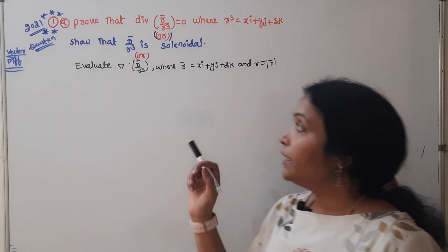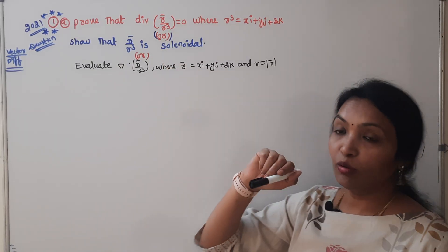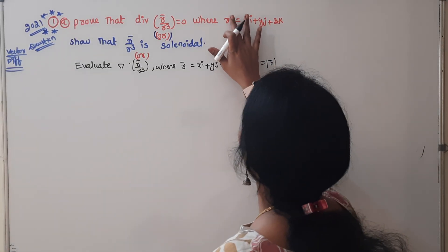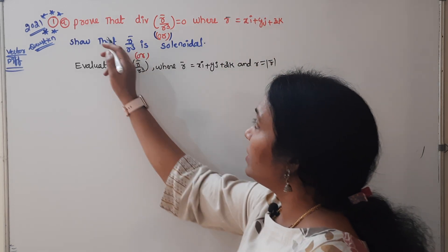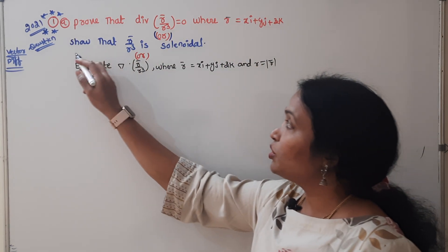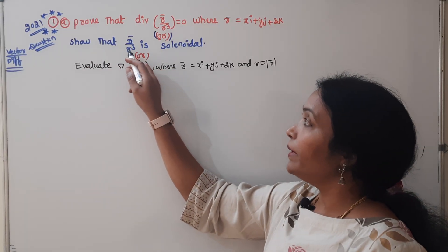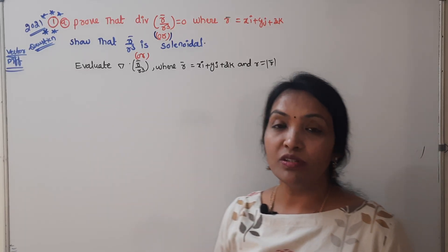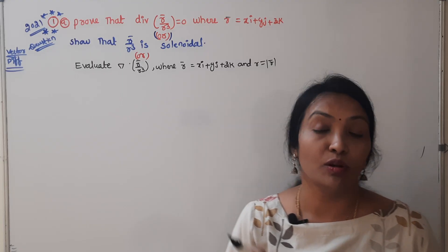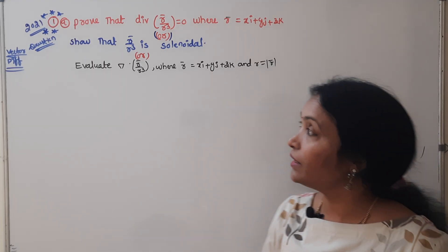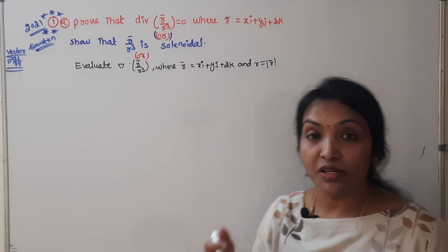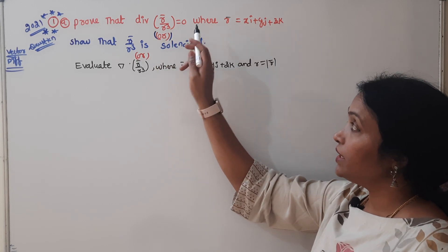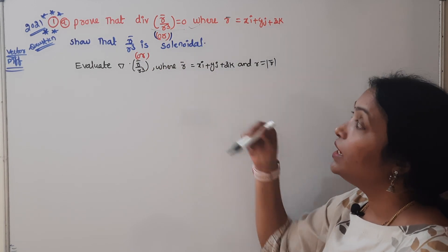Let's check this one. Here, prove that div(r̄/r³) = 0. And show that r̄/r³ is solenoidal. For solenoidal and irrotational: solenoidal means div(F̄) = 0, and irrotational means curl(F̄) = 0. So to prove the vector is solenoidal, we need to show div(F̄) = 0.